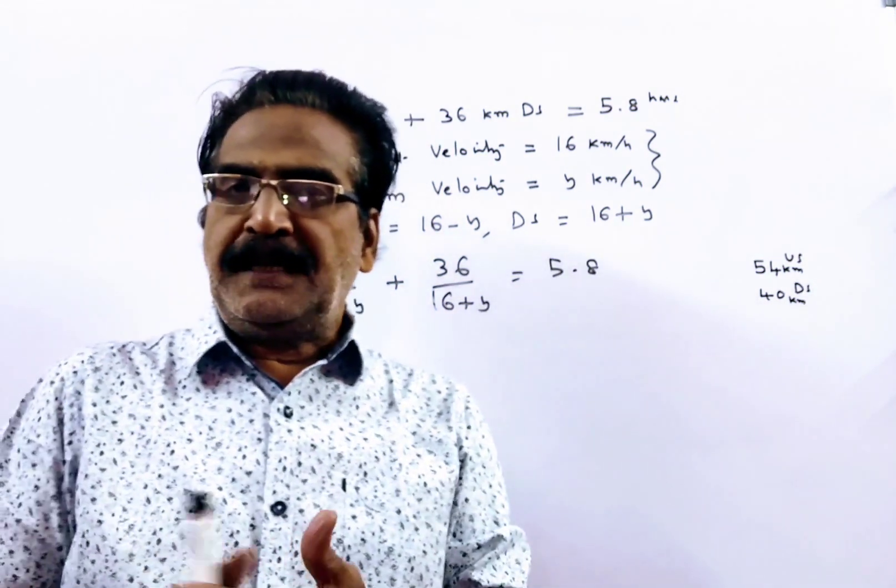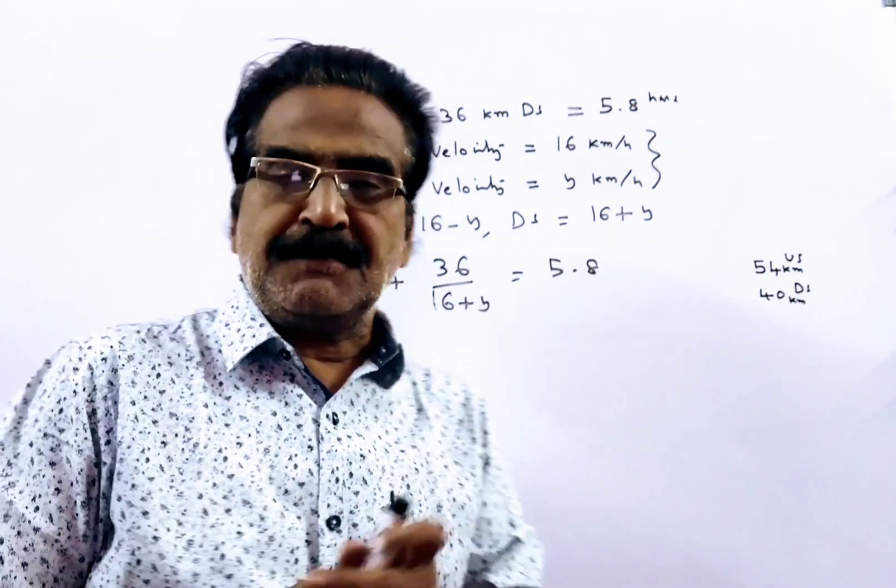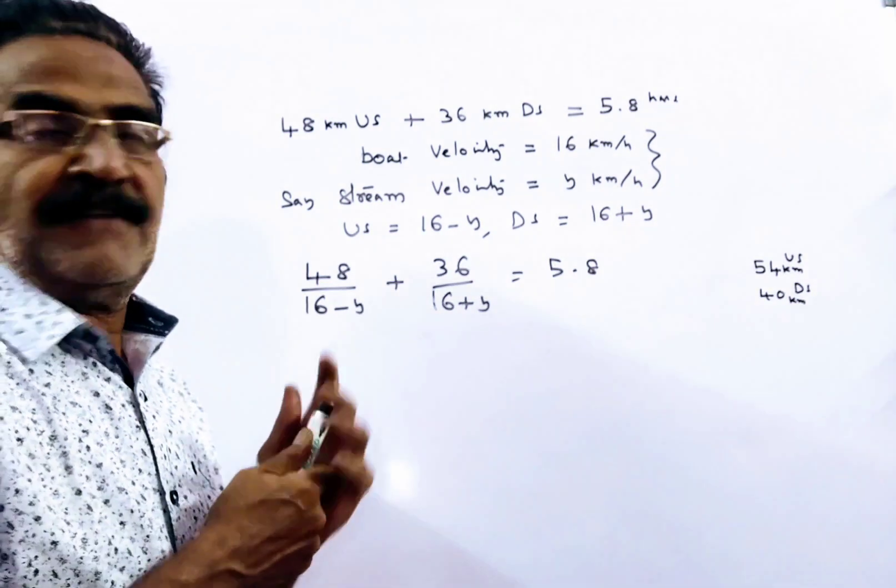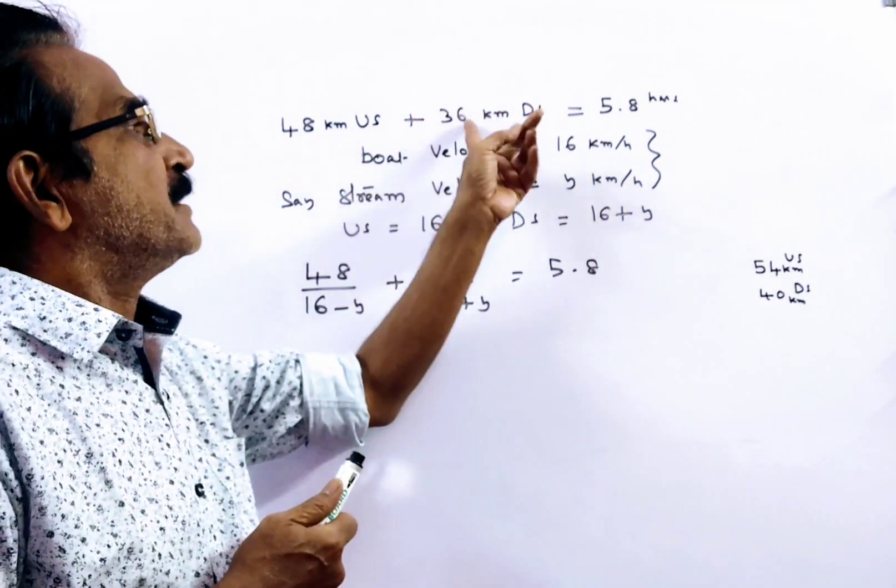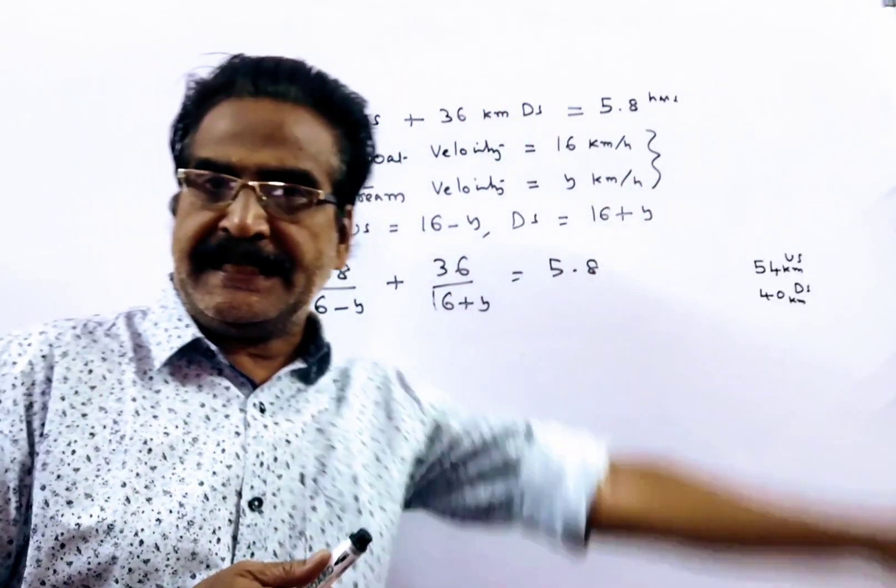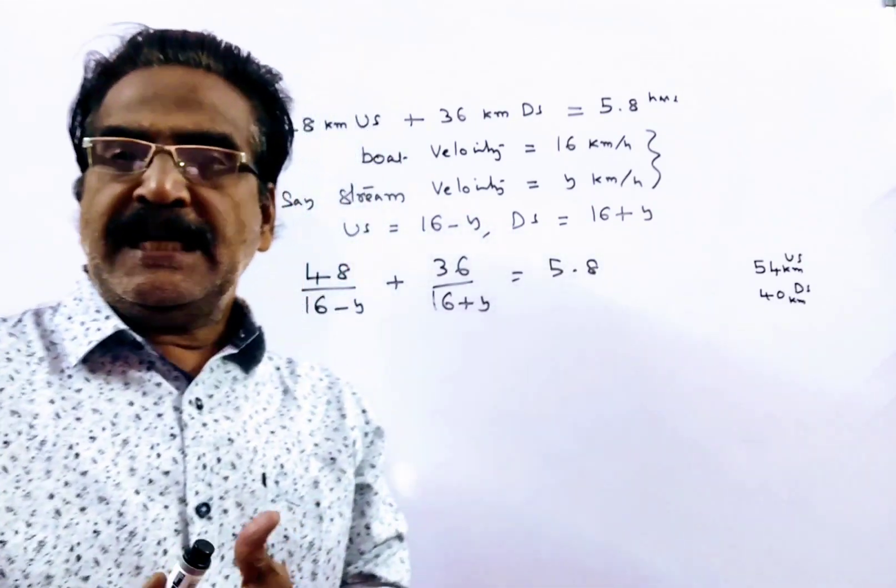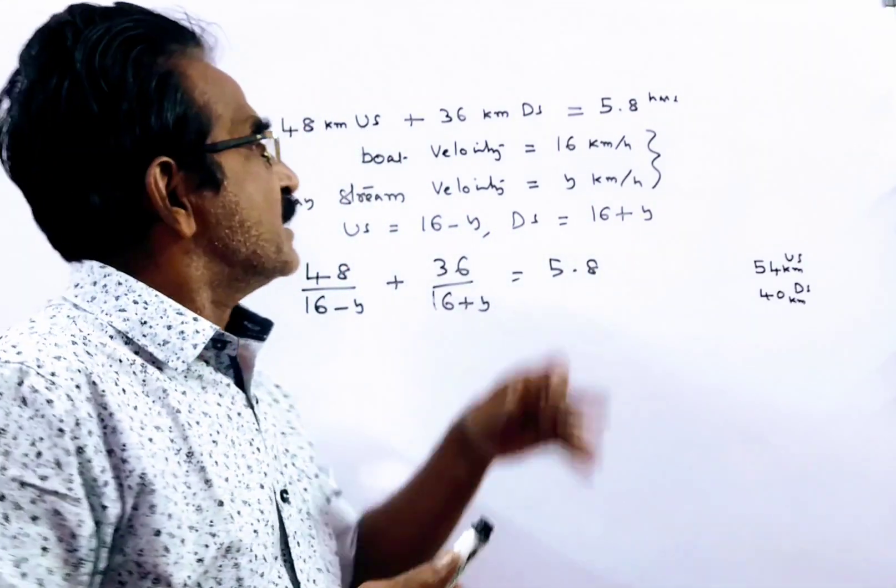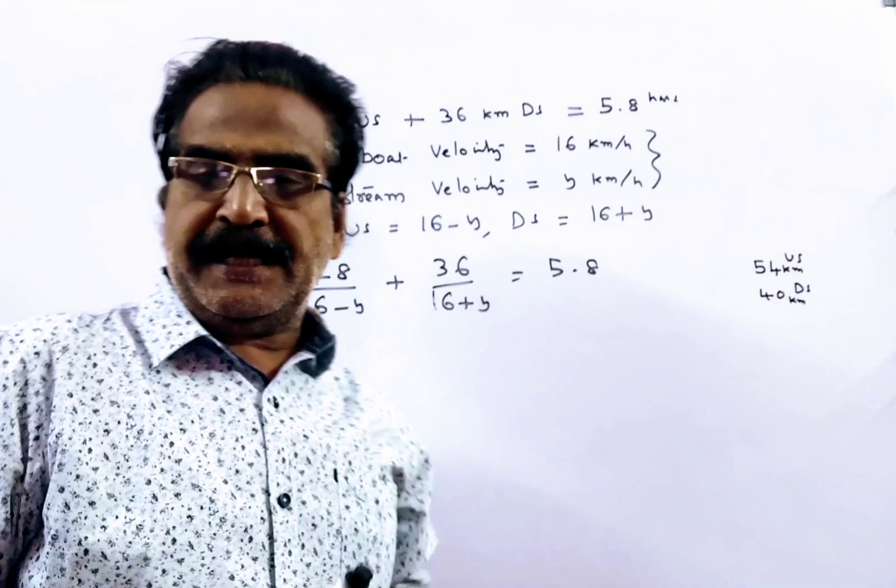Hi friends, good morning. Please look at the next problem in boats and streams. A boat can travel 48 km upstream and 36 km downstream in 5.8 hours, and the speed of the boat in still water is 16 kmph.